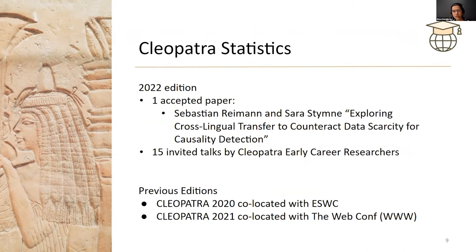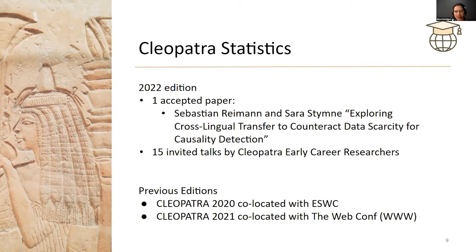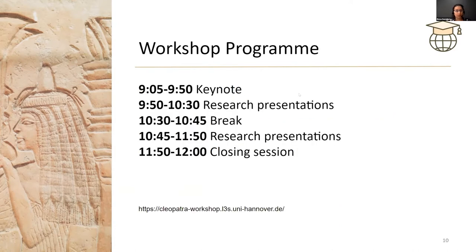Regarding the statistics, we received and accepted one paper, and we're very much looking forward to the presentation today from Sebastian Reimann and Sarah Stümner about exploring cross-lingual transfer to combat data scarcity for causality detection. We also have invited talks by the early stage researchers of Cleopatra. This is the third edition of the workshop — the first started in 2020 collocated with the Extended Semantic Web Conference. Today's program starts with a keynote, research presentations, a coffee break, then a second part of research presentations and a closing session.